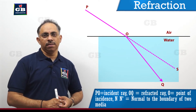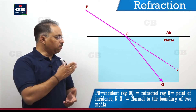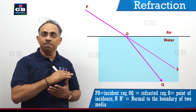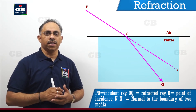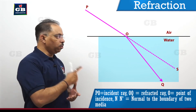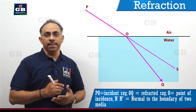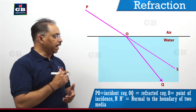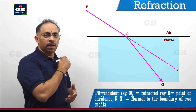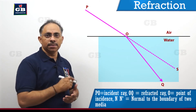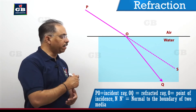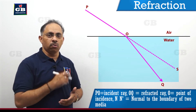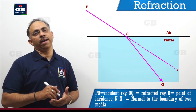The water surface being considered here is a plane surface. PO is called the incident ray. Since the light ray is not going along the original direction POS but is bending and traveling along the direction OQ, we call OQ the refracted ray.